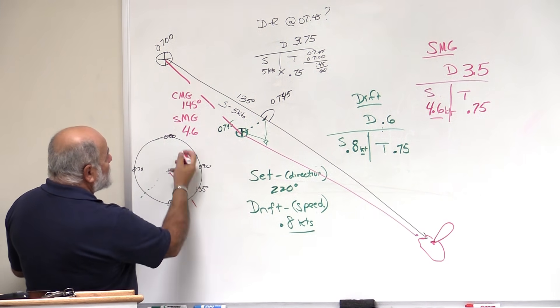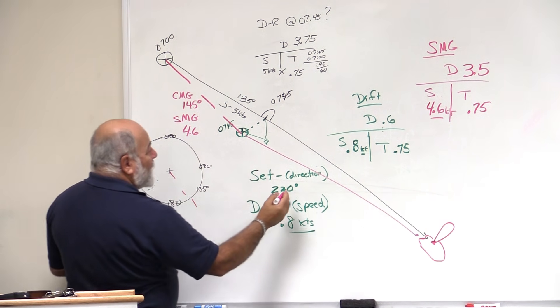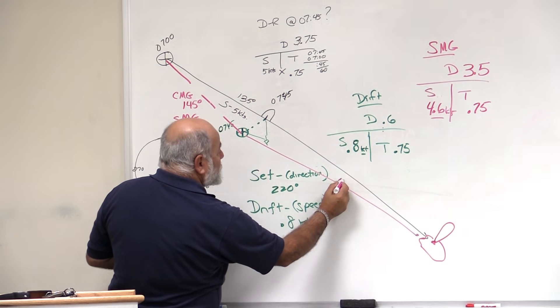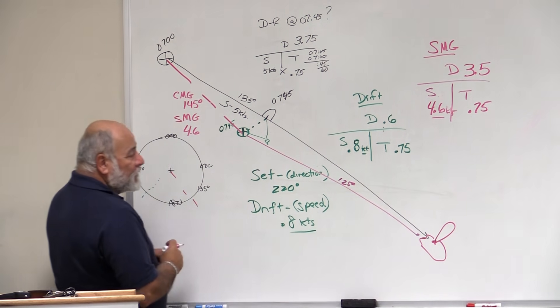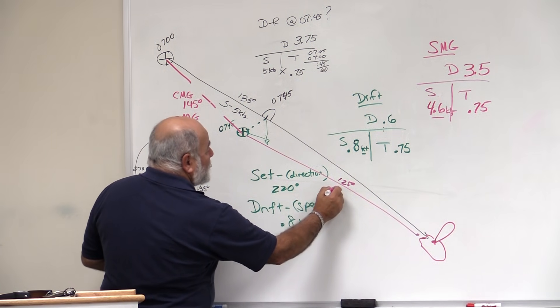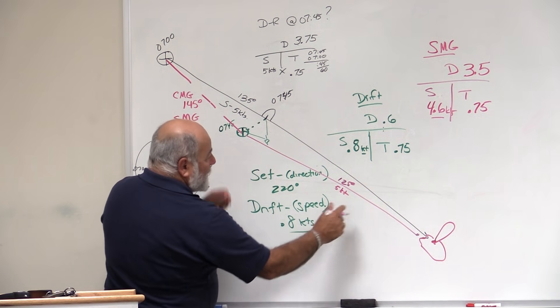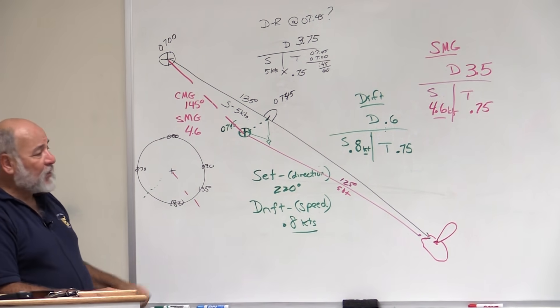We'd roll it to the compass rose. I don't know what that would be, maybe 120 degrees or 125 degrees, whatever it is. Our speed might stay the same, five knots. We'd get our distance, we'd get an ETA to get there.